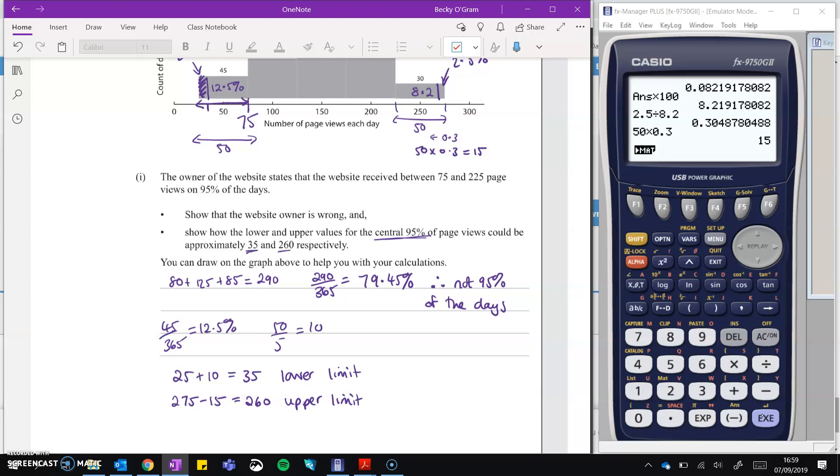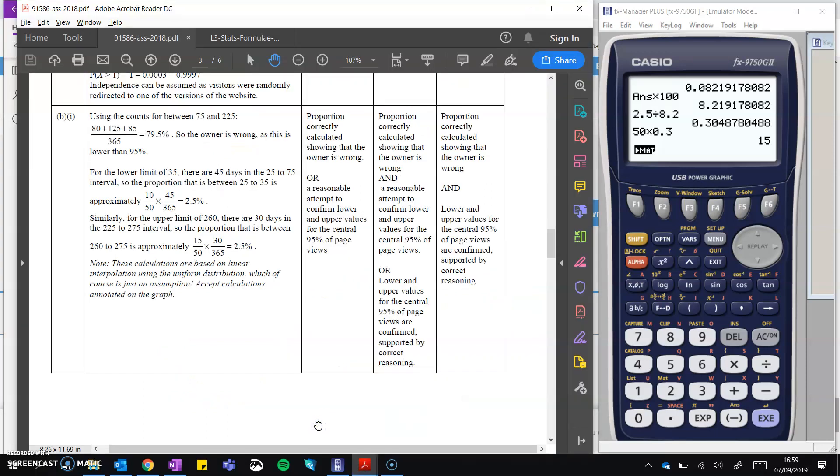And that's how we can get to that 35 and 260. Let's just check if they wanted anything else. So you can draw on the graph. You definitely should to help you with your calculations to show the thinking that you've done there to get those numbers. So let's take a look at the mark scheme. And you've got showing that we've got 79.5 and not 95% just here. So the lower limit is that working through that I just showed you. I think they've worded it slightly differently, but doing the same sort of thing. So if you correctly show the owner was wrong or an attempt on those limits, then you get a U, and then variations through to the excellence.